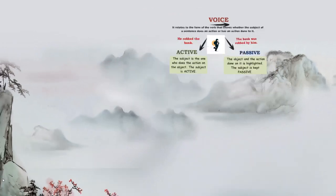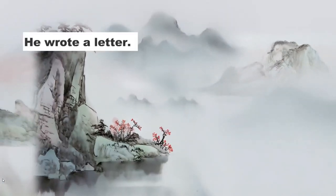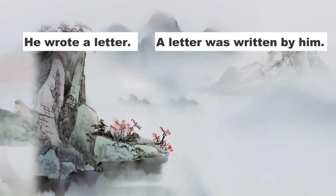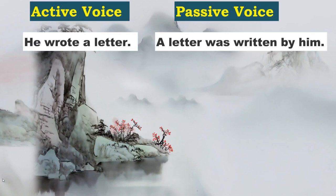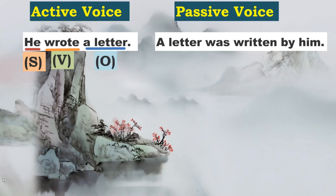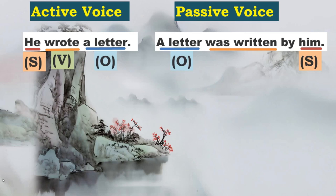Now this is voice. Let us proceed to understand the rules of transformation. Here there are two sentences where the transformation is already done. The first is in the active voice, the second is in the passive voice. In the active voice, the structure is subject plus verb plus object. In the passive voice, 'a letter' is an object but it takes a primary position, and the subject becomes secondary — it comes last. Look at what happens to the verb: 'wrote,' a past tense, becomes 'was written.' The 'to be' forms are is, are, was, were, and 'written' is the past participle.